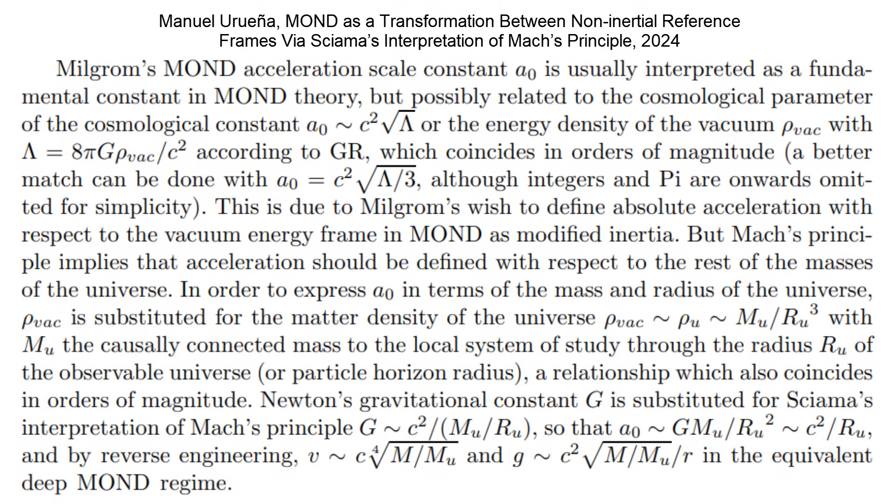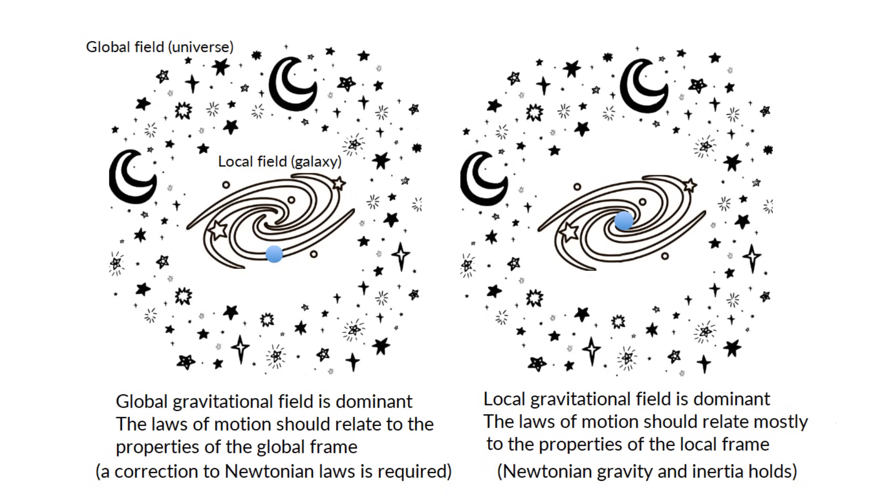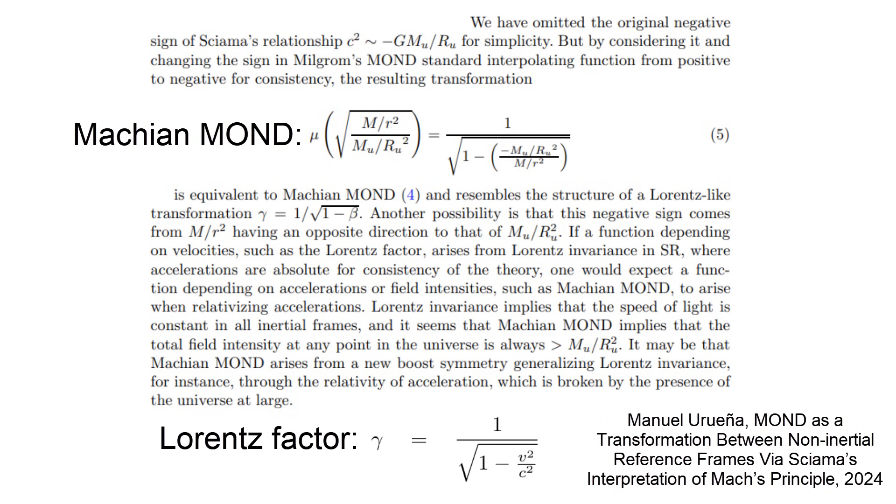But under a Machian perspective, MOND must come from a symmetry involving the gravitational field intensity of the observable mass of the universe, or in other words, a symmetry of acceleration. It must come from something similar to where the Lorentz factor comes from in special relativity, from a new boost symmetry generalizing Lorentz invariance. Indeed, Machian-MOND resembles a Lorentz-like transformation between two non-inertial reference frames, the local frame of the galaxy and the global frame of the rest of the masses of the universe.